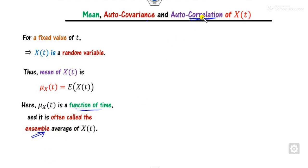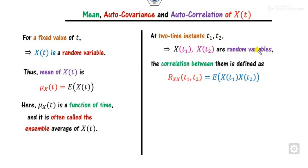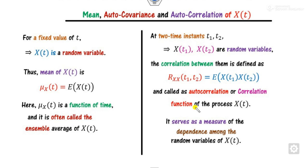What is the correlation? If we consider two time periods t₁ and t₂ giving random variables, the correlation between them is denoted R and is called the autocorrelation, or simply correlation. It is defined as R(t₁, t₂) = E[X(t₁)·X(t₂)]. The autocorrelation measures the degree of dependency among the variables.